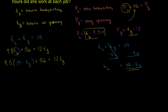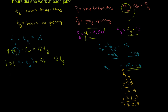Now we solve for t_g. First, 9.5 times 19 equals 180.5. So the equation becomes: 180.5 minus 9.5 t_g plus 56 equals 12 t_g. Adding 180.5 and 56 gives 236.5, so: 236.5 minus 9.5 t_g equals 12 t_g.